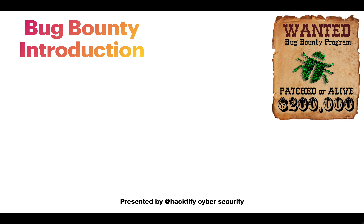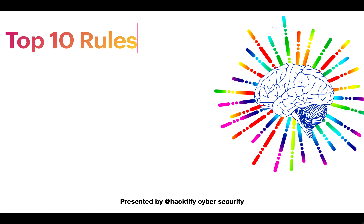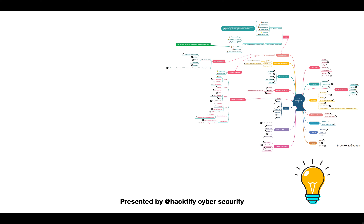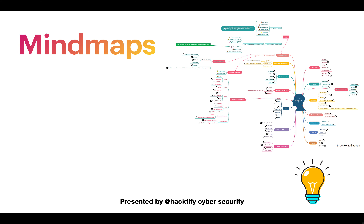This course starts with the basics of Recon and bug bounty hunting introduction, covering fundamentals all the way through to advanced exploitation. We will learn about the top 10 rules of a bug bounty hunter and understand the psychology of hackers. The mind map section will cover approaches and methodologies towards the target for pen testing and bug bounties, giving us a clear visual representation to guide the attack process.